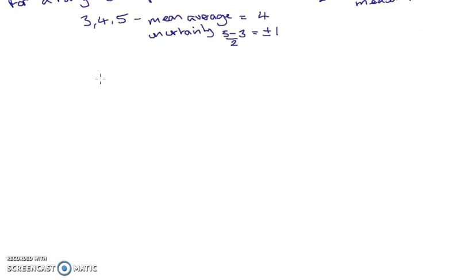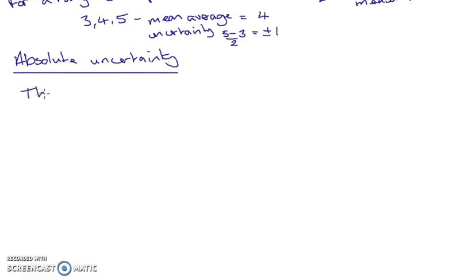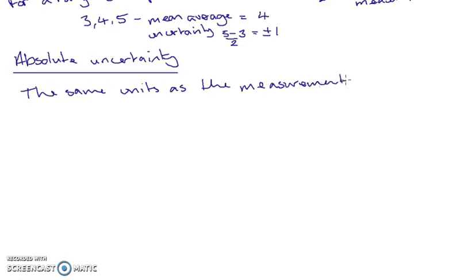The next thing is proper names for uncertainty. The first is absolute uncertainty. You know you've got an absolute uncertainty because it has the same units as the measurement. The symbol we use for an absolute uncertainty is delta — so delta-x, delta-y, delta-R for resistance, or delta-N for newtons. That delta represents our uncertainty.